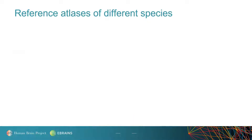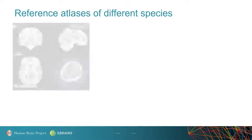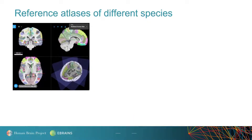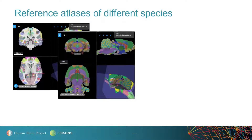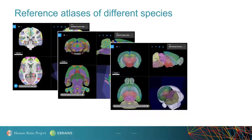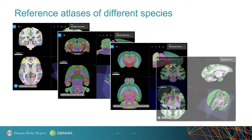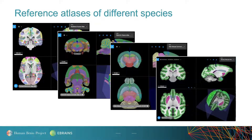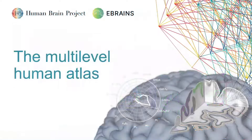eBrains supports reference atlases of the human brain, the rat brain, and the mouse brain. We have also just released a first template for an atlas of the non-human primate monkey, which is in development. To better understand how to use eBrains' atlases, let's have a closer look at one of them and discover the structure of the human brain atlas.